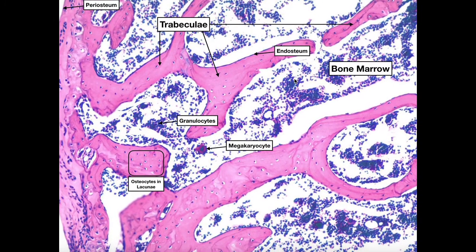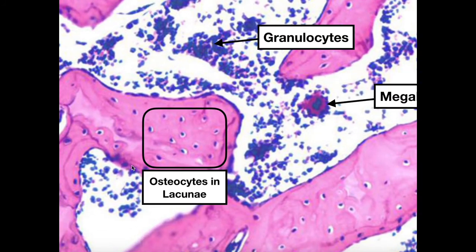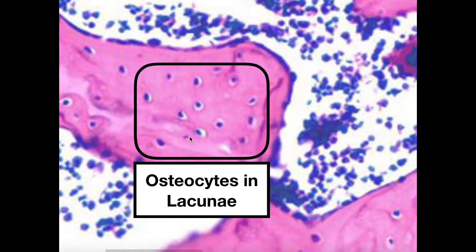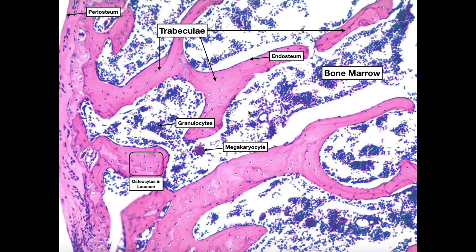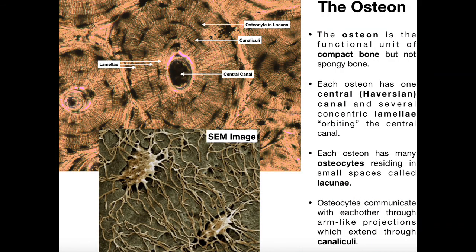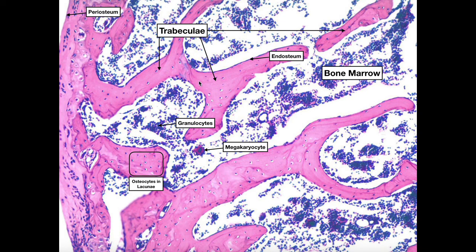Even though spongy bone looks very different from compact bone, it still has osteocytes. Looking at the trabeculae, the purple dots within them are the nuclei of the osteocytes, and the small white region surrounding each is the lacuna. So we have osteocytes situated in spaces called lacunae — they're everywhere. Compact bone is arranged in osteons; spongy bone does not have osteons, it has trabeculae. The commonality between both types is that they both have osteocytes in lacunae. The spaces between trabeculae contain bone marrow.